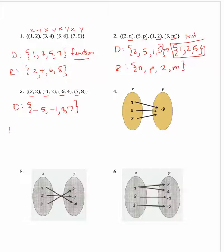The range is the second coordinates. We have a 2, a 2, a 4, and an 8. So the range would be 2, 4, 8 — we don't repeat the 2. Since the domain does not repeat any x's, this is a function.